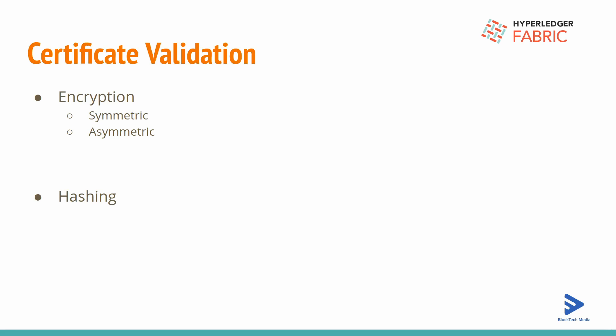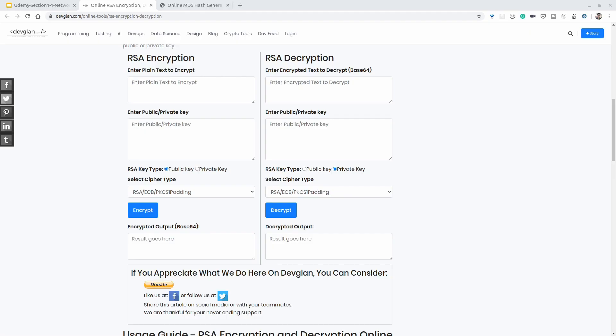Hashing is an irreversible function — once we create a hash we cannot recover what the original input was. You might wonder: what is the purpose of hashing if we cannot recover the input? I will explain how this is used in certificate validation.